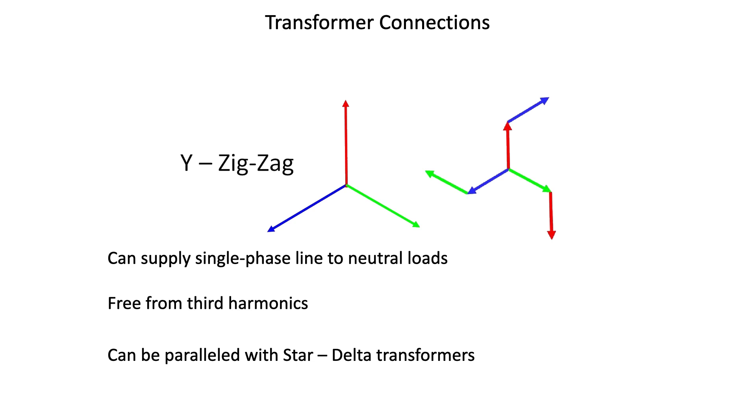The phase relationship of the phase to phase voltage, and we're looking at the red to white in this case, is the same as a star delta transformer. That is, there's a 30 degree phase shift from primary to secondary, yet a neutral connection is available for relaying and other single phase loads.